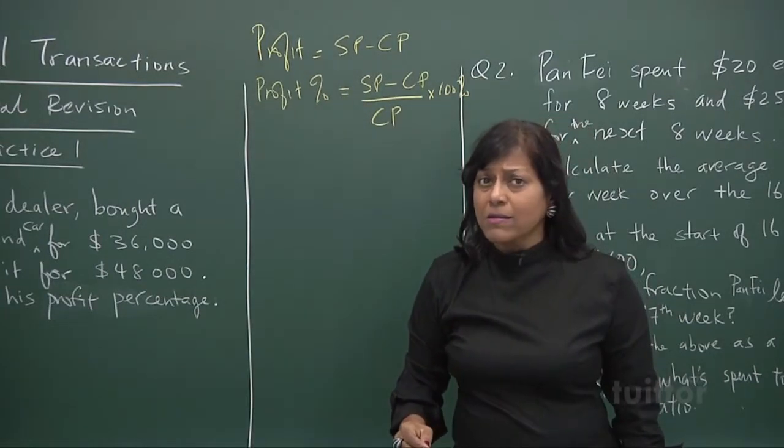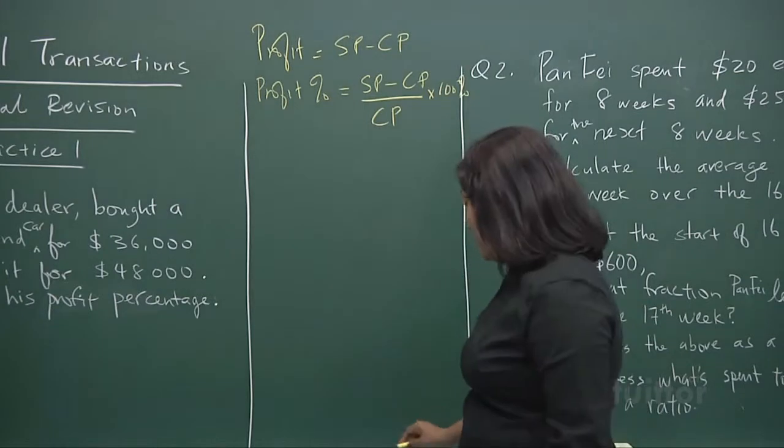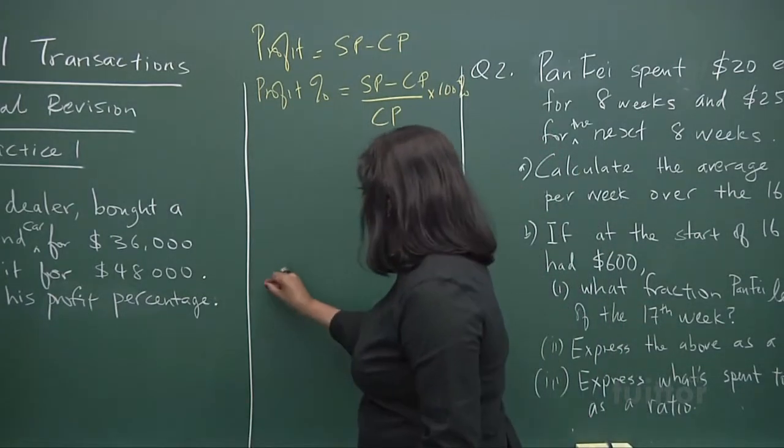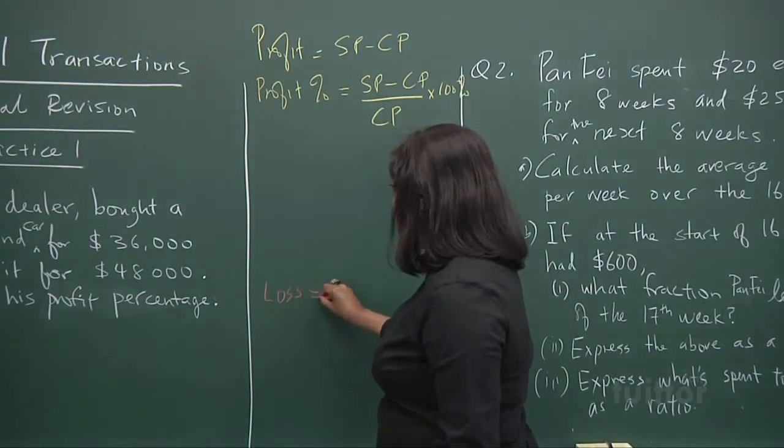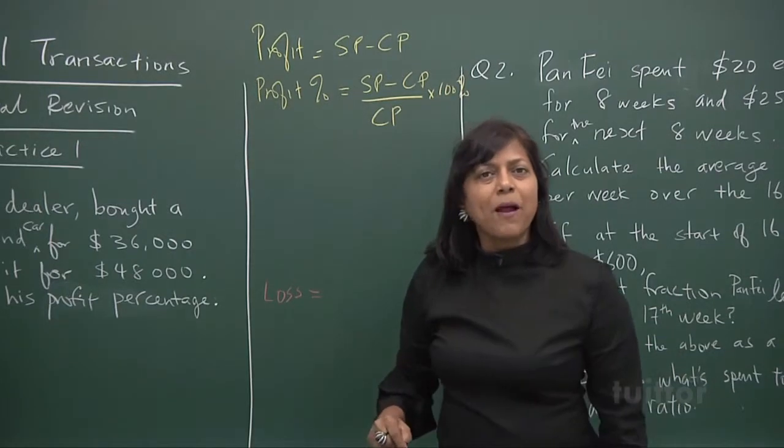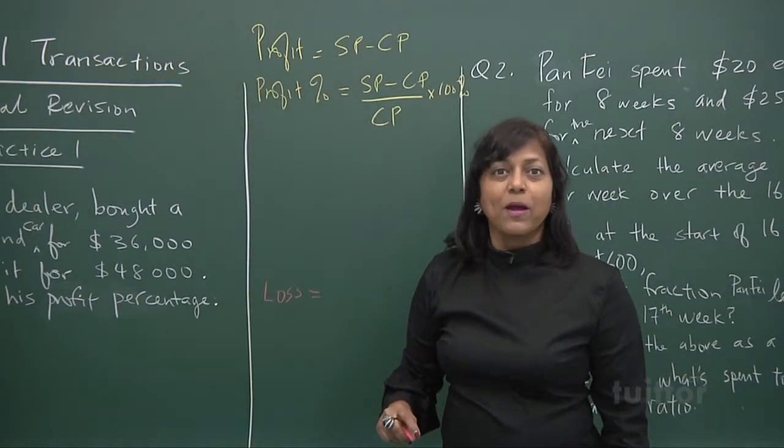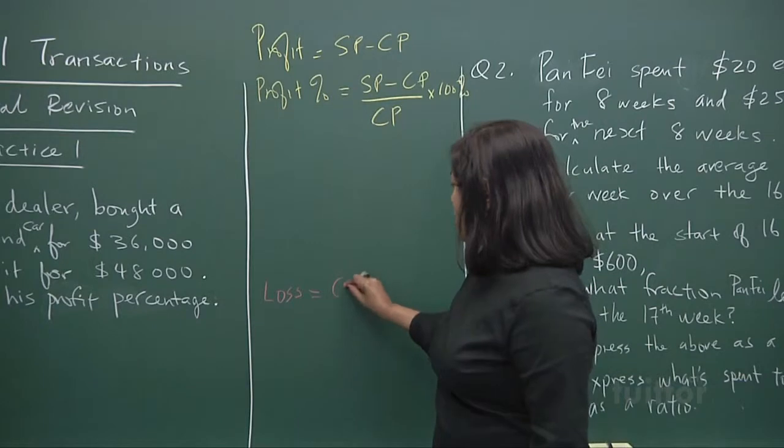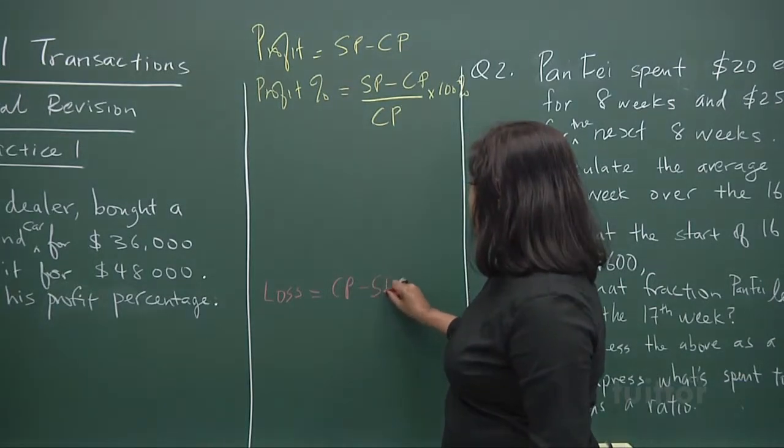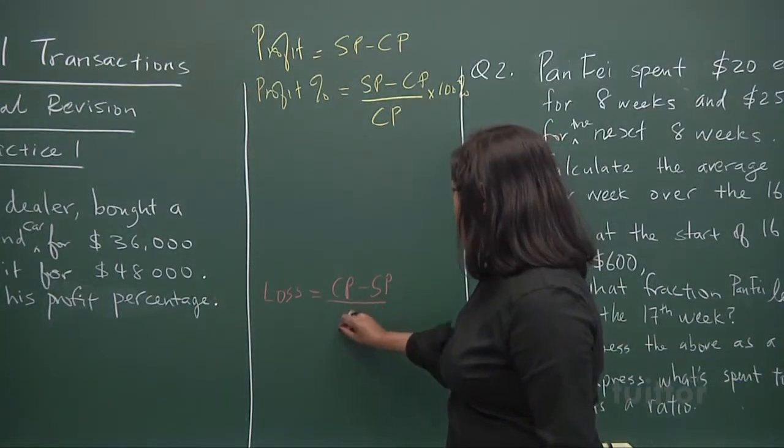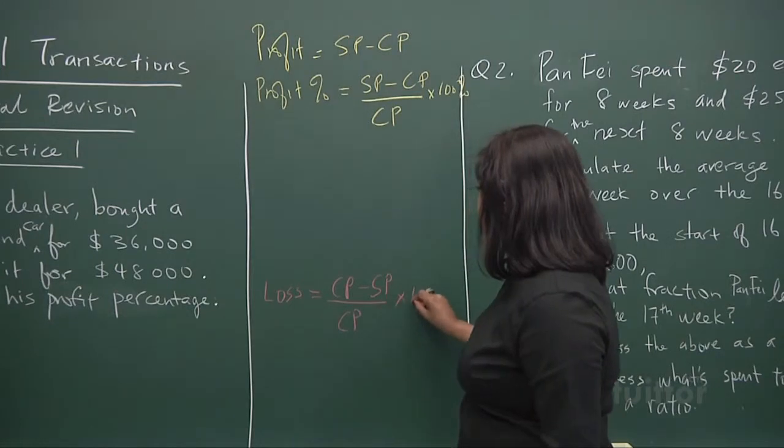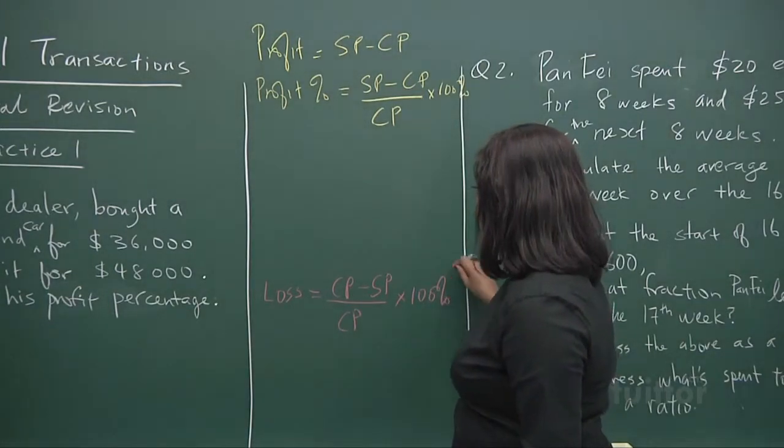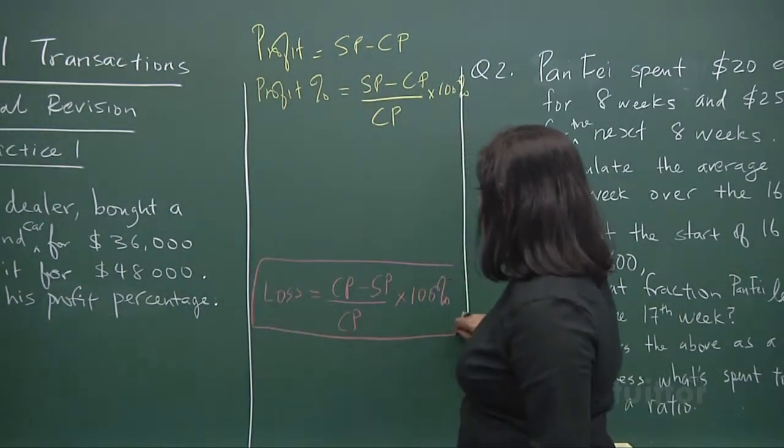Now, how about loss? Loss will be equal to? Well, I put red. Loss. Who is more? Selling price or cost price? Cost price is more. So you get cost price minus the selling price. It's still over the cost price times your 100%. So that's your loss percent.